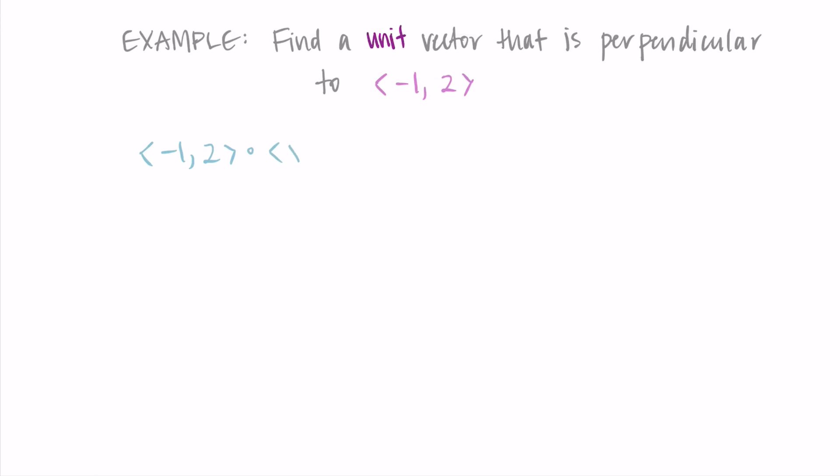Okay, so to find a unit vector, we still know that the dot product needs to be equal to 0, but now we also know that the magnitude of our vector x, y needs to be equal to 1.